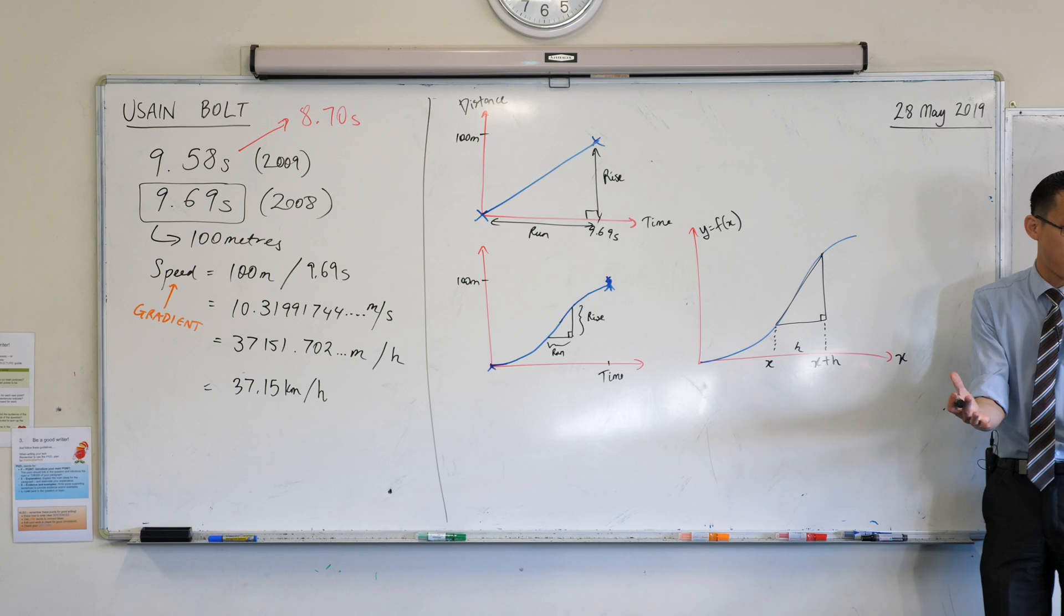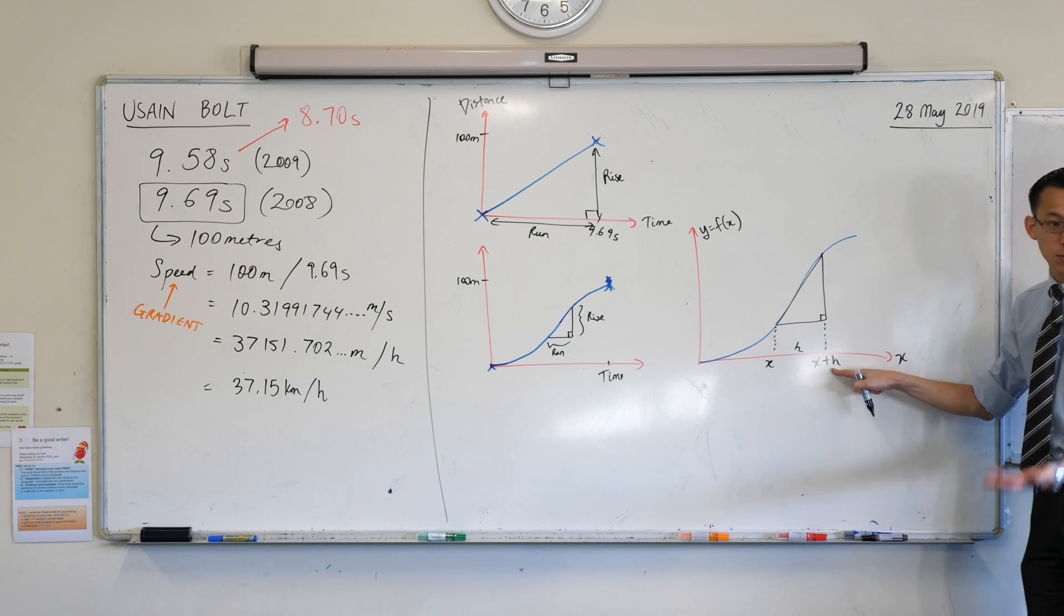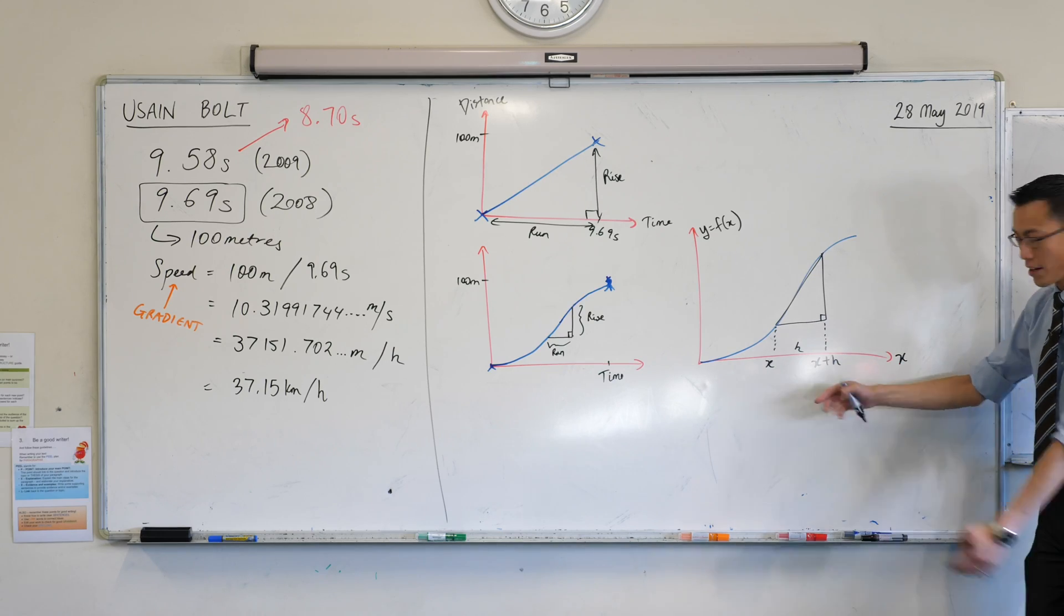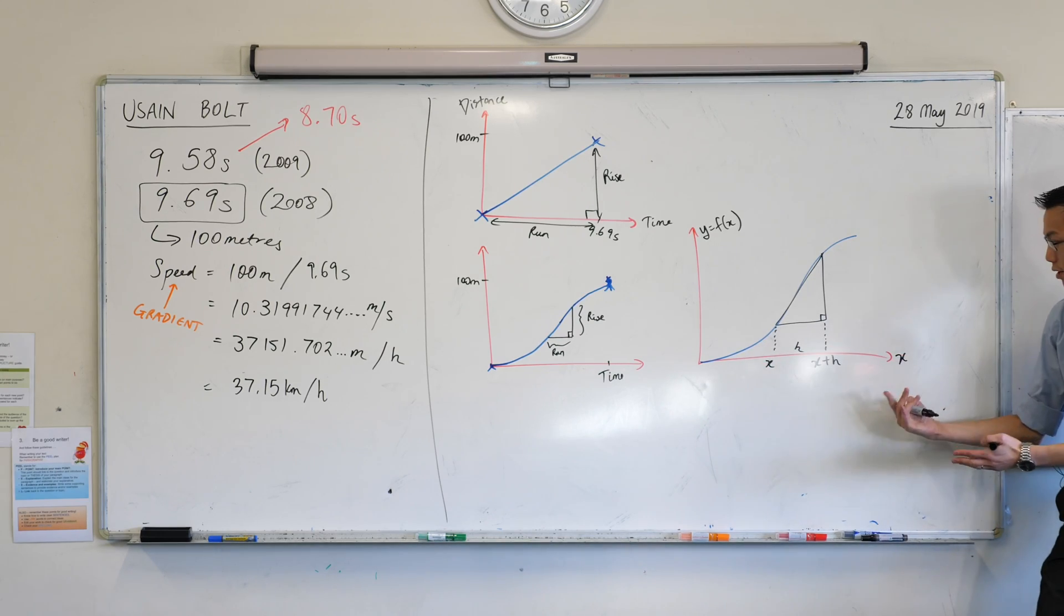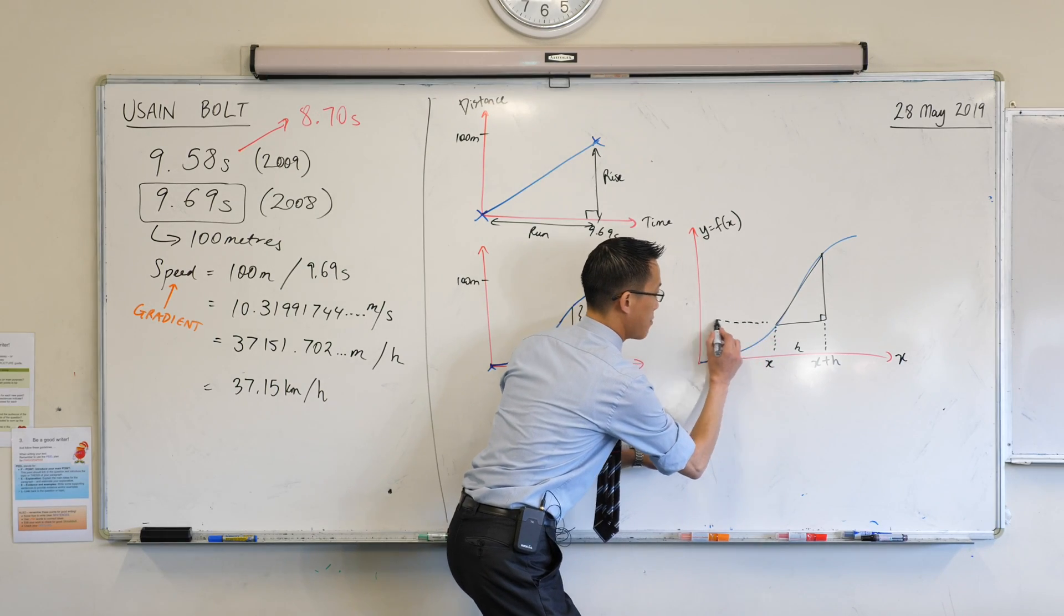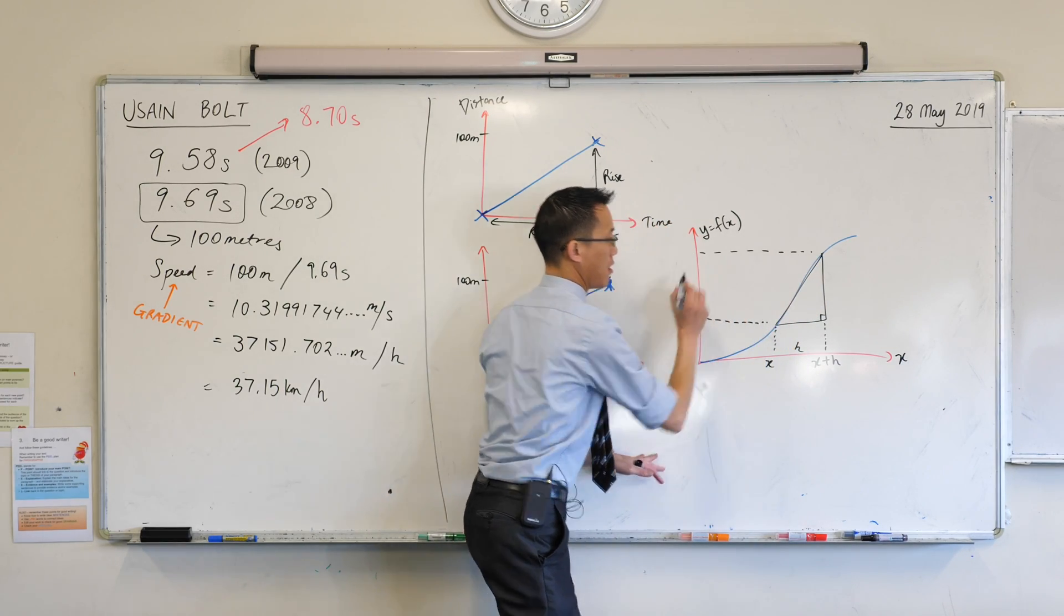Does that make sense? If h were 1, for example, then this would be x plus 1. You've moved over just a little bit. So there's an x value, there's an x value a little bit further along. I can use each of these to work out the y values, because these will give me the rise.